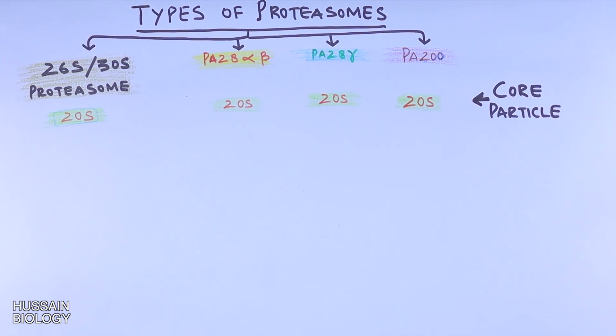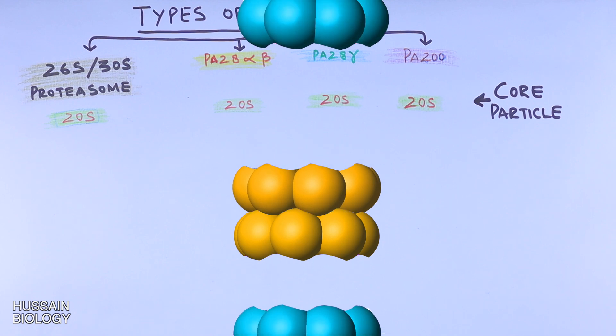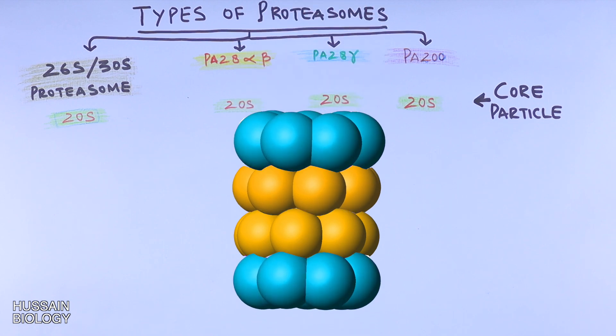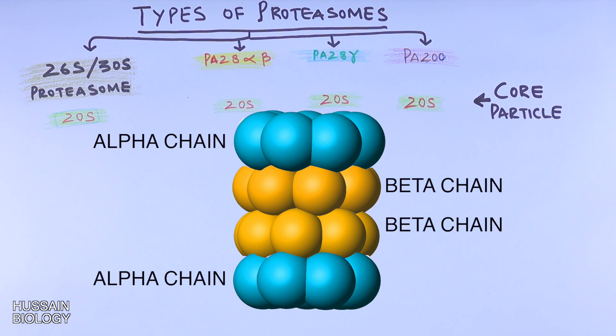Here in this diagram we can see the core particle. It's made up of two alpha subunit rings and two beta subunit rings. The inner rings constitute the two beta subunits, whereas the outer rings constitute the two alpha subunits. Furthermore, the 26S or 30S proteasome is divided into four more types.